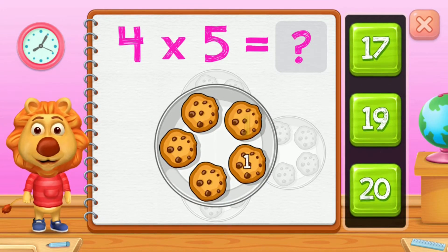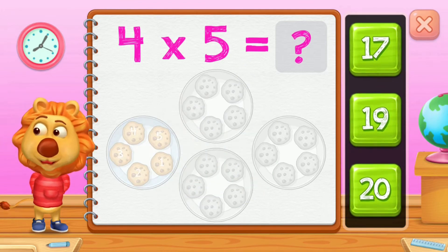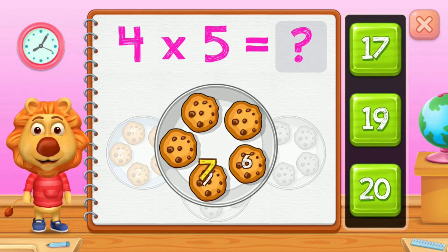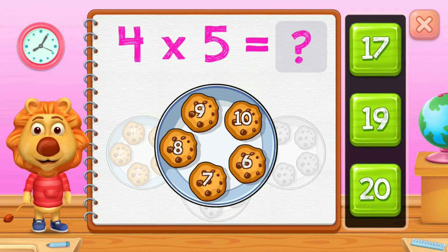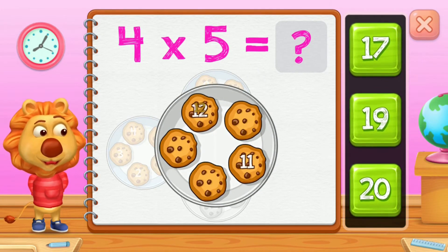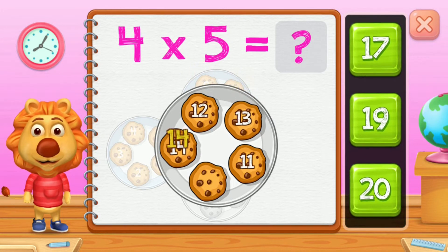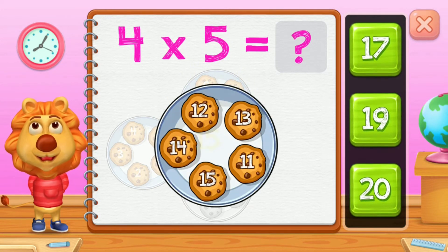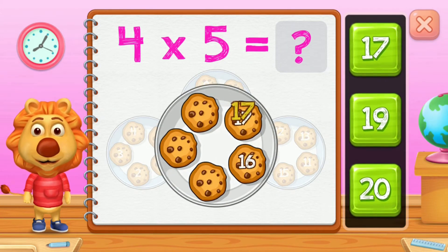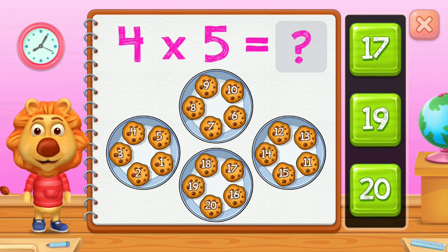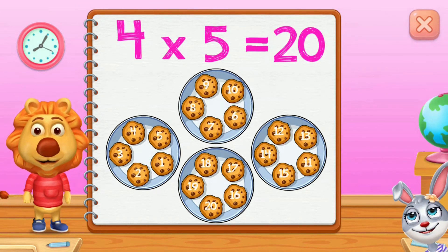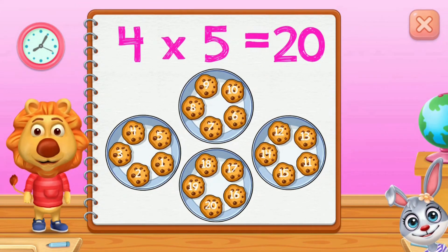1, 2, 3, 4, 5, 6, 7, 8, 9, 10, 11, 12, 13, 14, 15, 16, 17, 18, 19, 20. 4 groups of 5 equals 20.